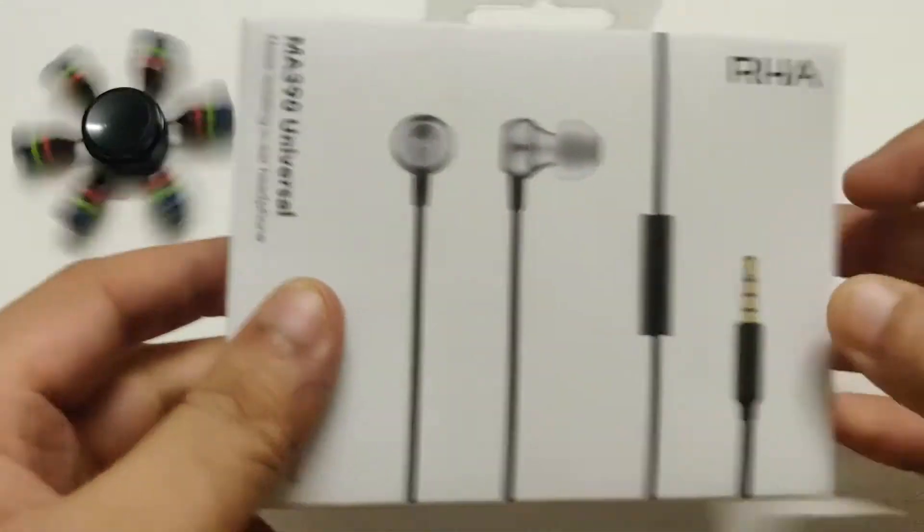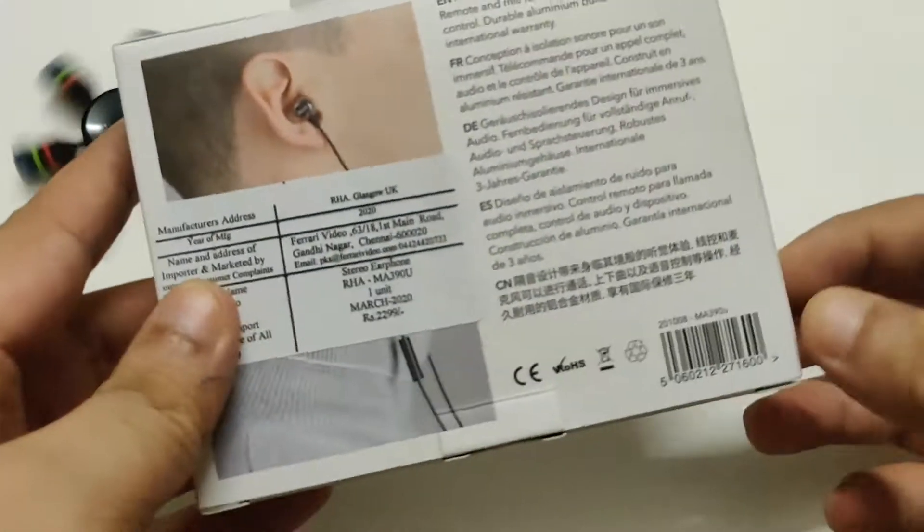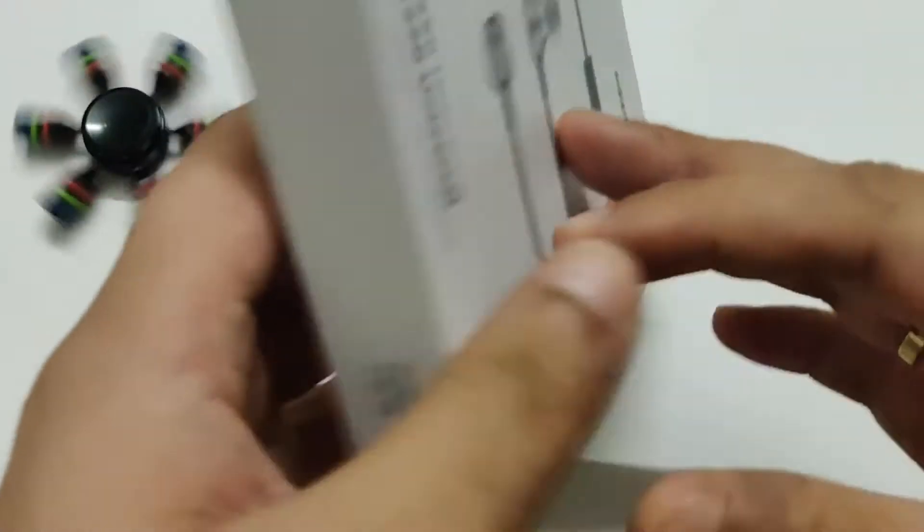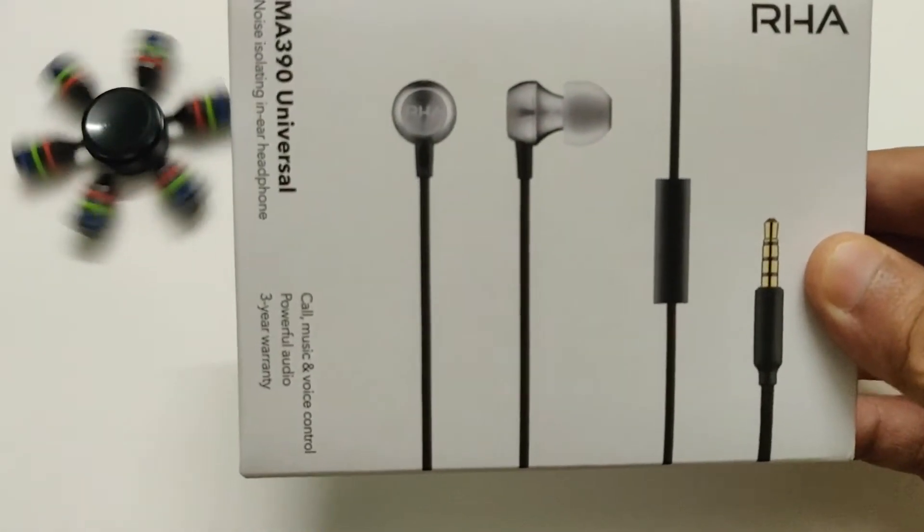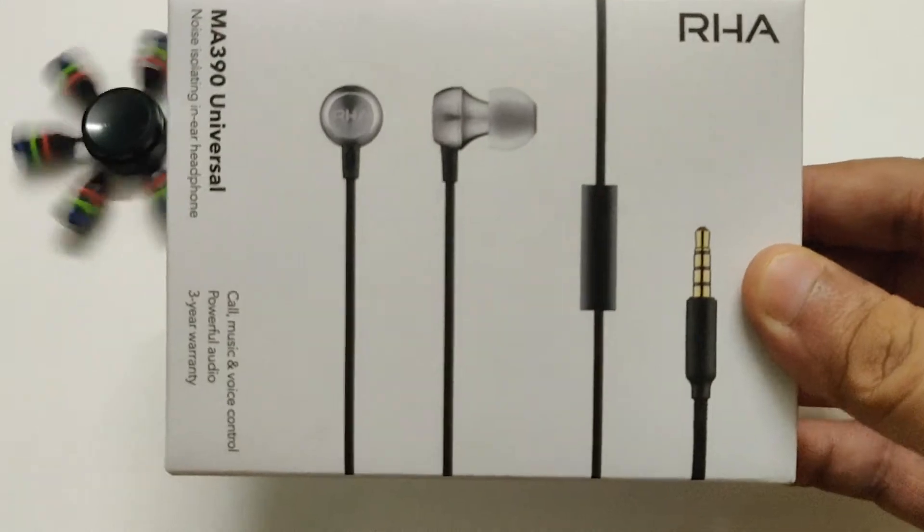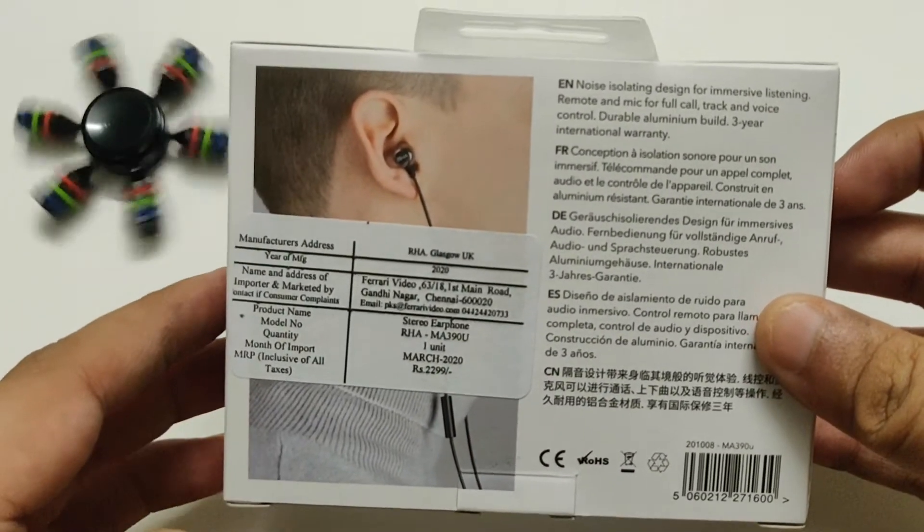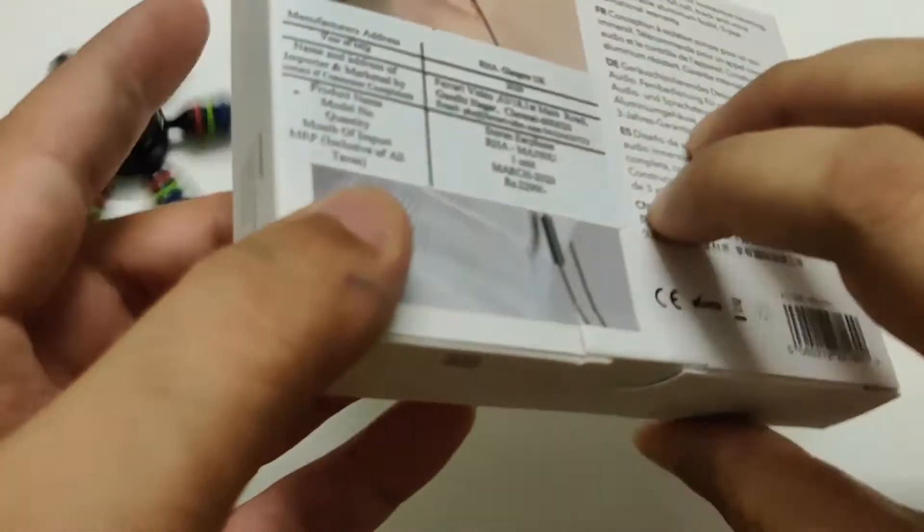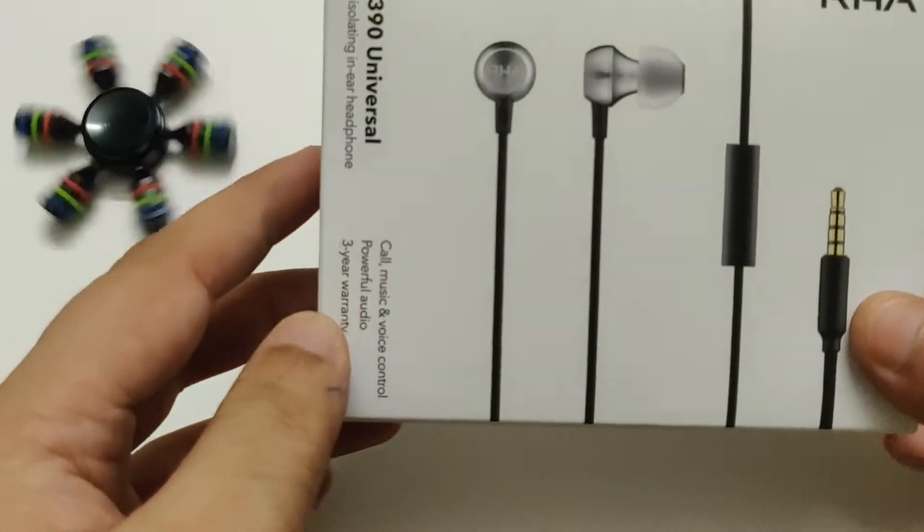RHA is a high-end British audio brand from Scotland and they make some outstanding in-ear earphones across all price brackets. So if you talk about the RHA 390 Universal, RHA 390 is an entry level product priced around INR 2000.